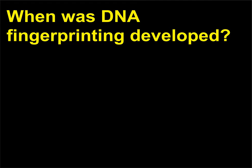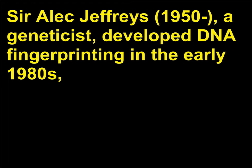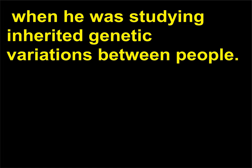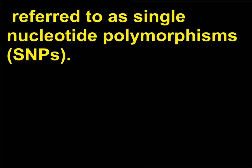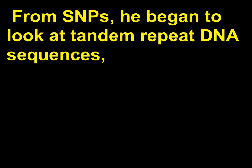When was DNA fingerprinting developed? Sir Alec Jeffreys (1950), a geneticist, developed DNA fingerprinting in the early 1980s when he was studying inherited genetic variations between people. He was one of the first scientists to describe small DNA changes referred to as single nucleotide polymorphisms (SNPs). From SNPs, he began to look at tandem repeat DNA sequences in which a short sequence of DNA was consecutively repeated many times.